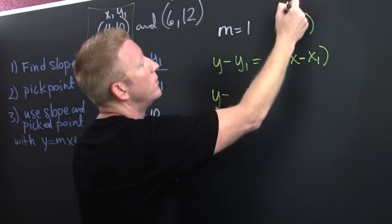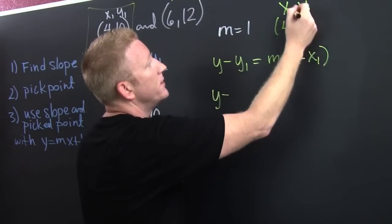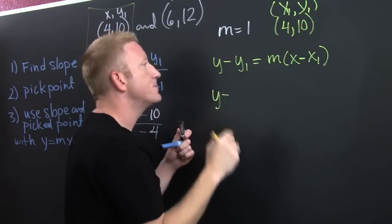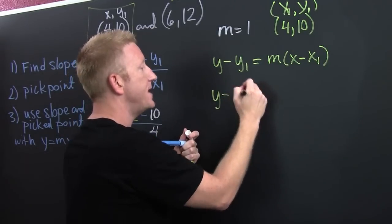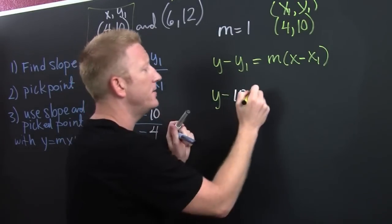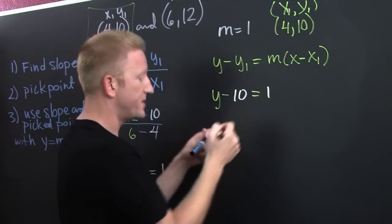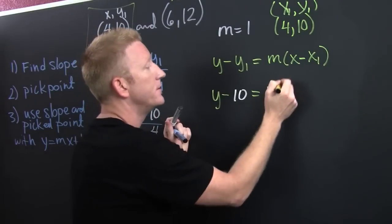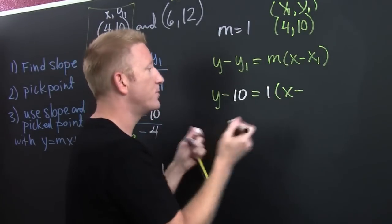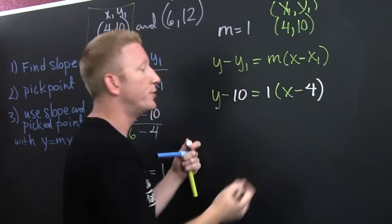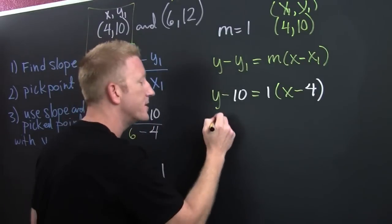And I think this is consistent with how your book does it. So then here we go. Y minus what's y1? That's x1, that's y1. That's my point. My y1 is 10. And then that's going to be equal to my slope, which is 1, and then this is x minus what's my x1? My x1 is 4. Finish him.